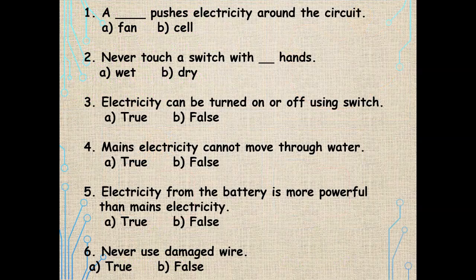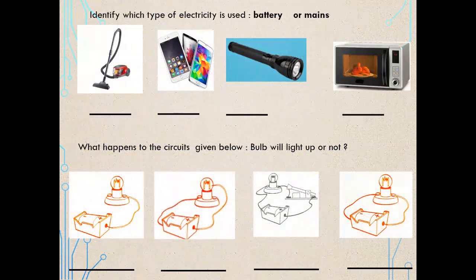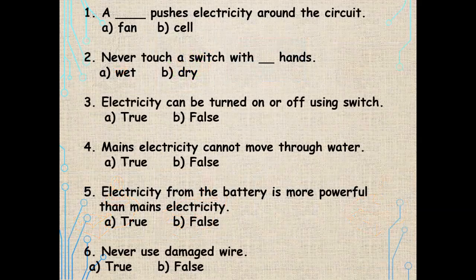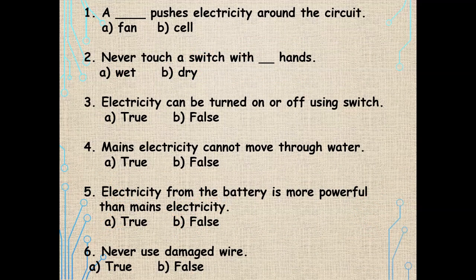Now answer these questions. Fill in the blanks: a dash pushes electricity around the circuit — a fan or a cell? Correct, it is the cell. Next: never touch a switch with dash hands — wet or dry? Wonderful, it is wet — we should never touch a switch with wet hands. Electricity can be turned on or off using a switch — true or false? Correct, it is true.